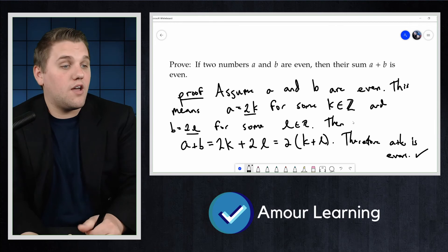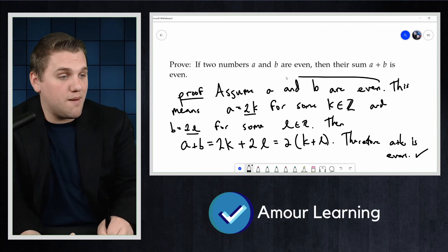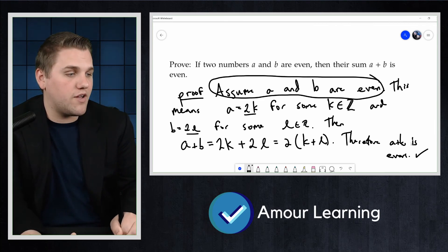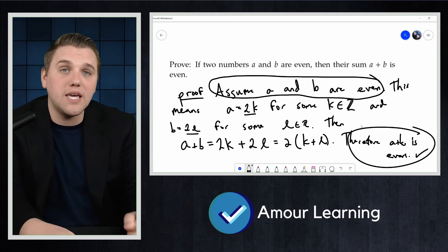We showed that A plus B is even by assuming that A and B are even, which means that A and B are even implies that A plus B is even.